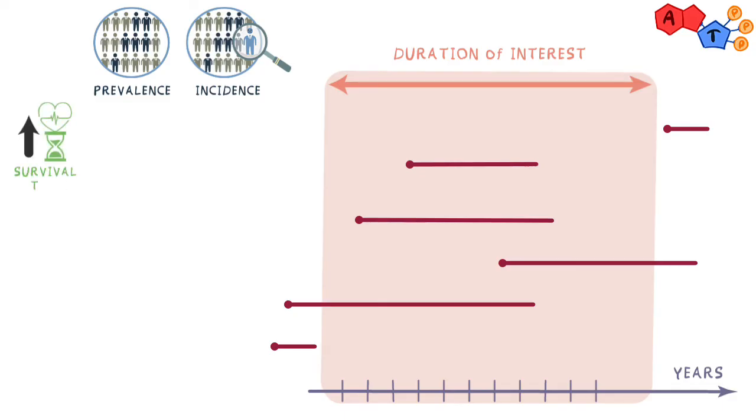With increased survival time, we can further extend these lines out. Any points that were barely pushing into the timeline that we're interested in would now be counted in our study and increase the overall prevalence. But we didn't increase the number of dots at all, so incidence stays the same.